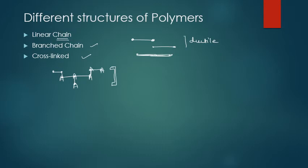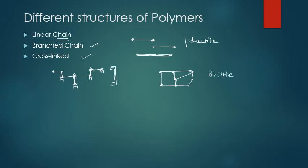In cross-linked polymers, linear or branched chains are connected across to each other as well. These cross-links create very, very strong bonds, making the material hard and brittle. You can use cross-linked polymers to make brittle, hard substances with a higher melting point than linear or branched structures.